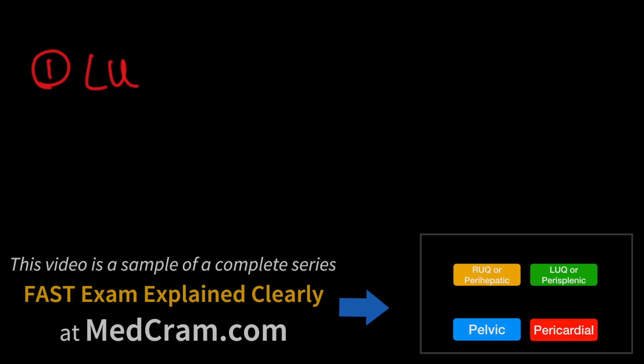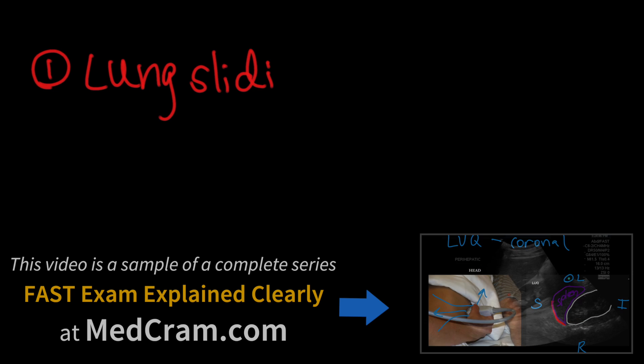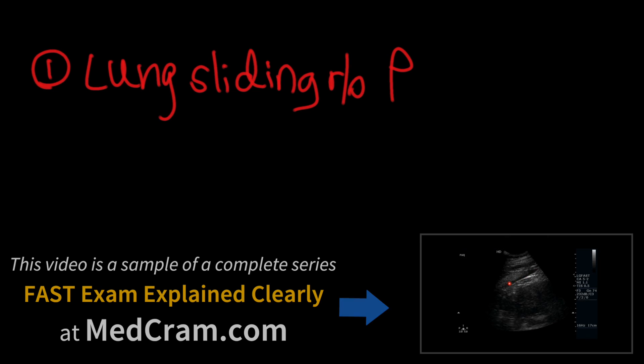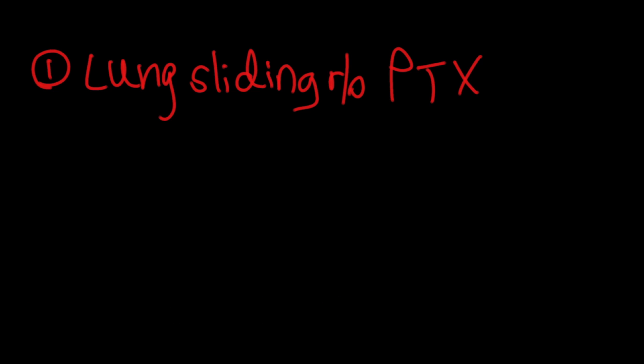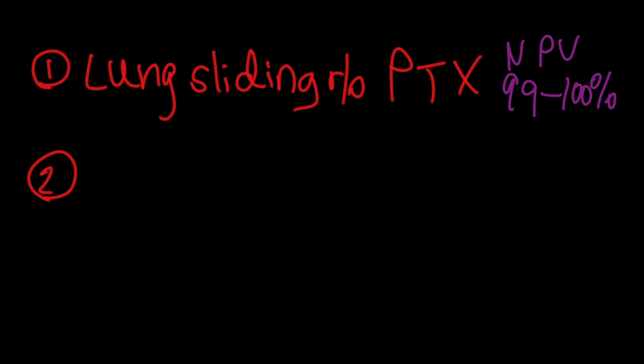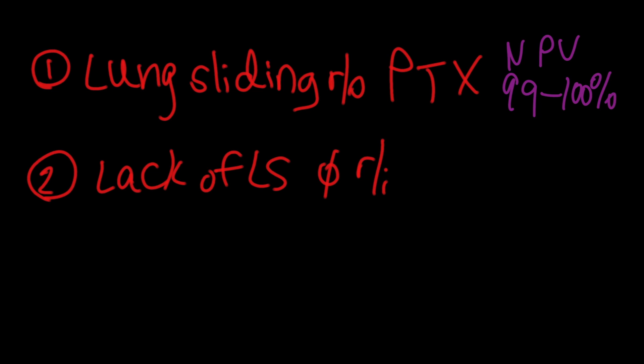Now that you understand lung sliding, I want to make three points. The first is that the presence of lung sliding effectively rules out a pneumothorax at the intercostal level that you're scanning. So in a supine trauma patient, if you're concerned about a tension pneumothorax and scanning at the anterior portion of the lung and they have lung sliding, you've effectively ruled out a tension pneumothorax. This does so with a negative predictive value of 99 to 100%.